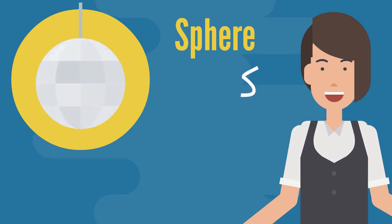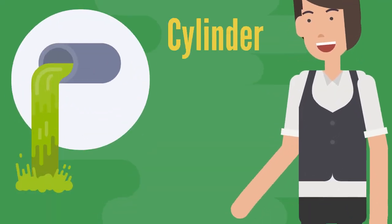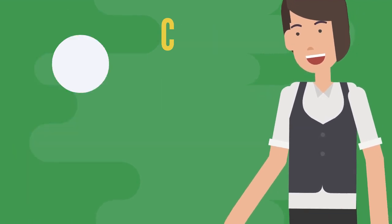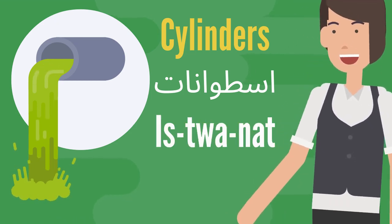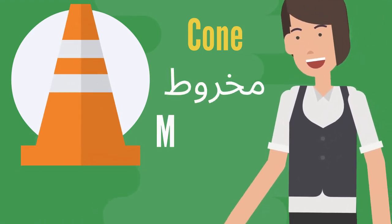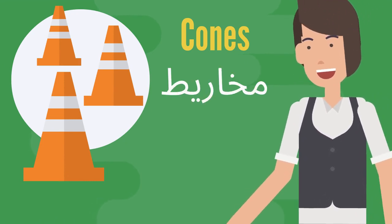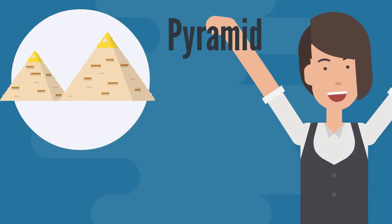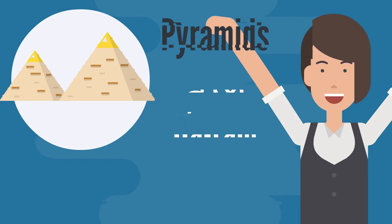Sphere — كرة. Cylinder — إسطوانة. Cone — مخروط. Pyramid — هرم.